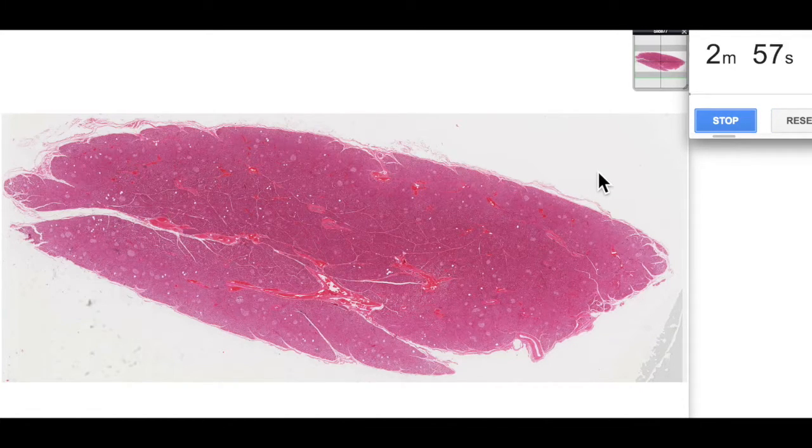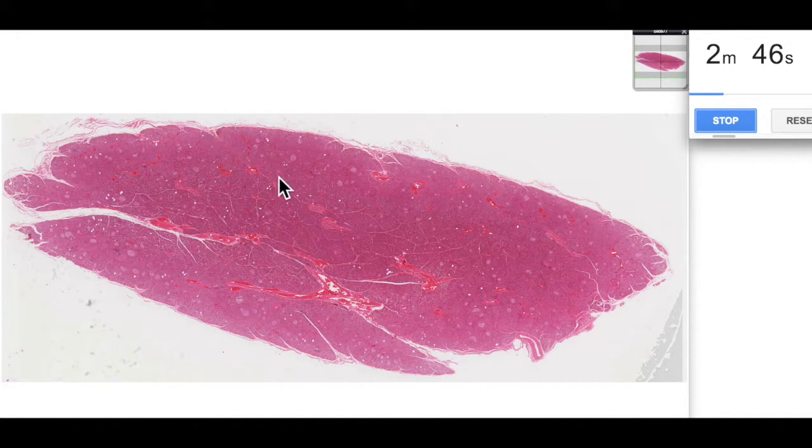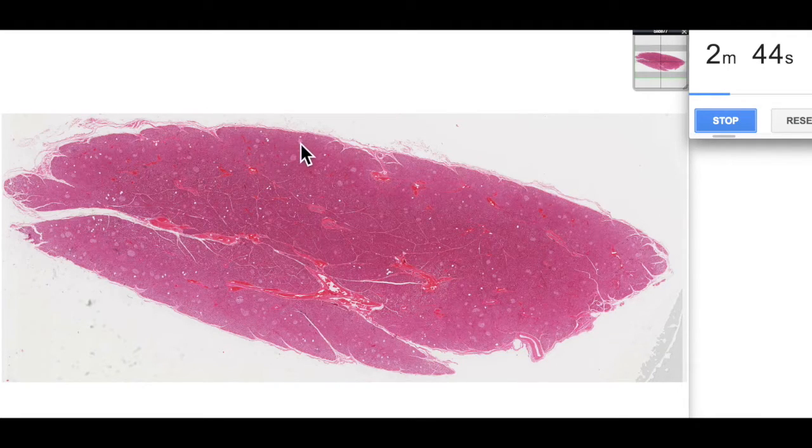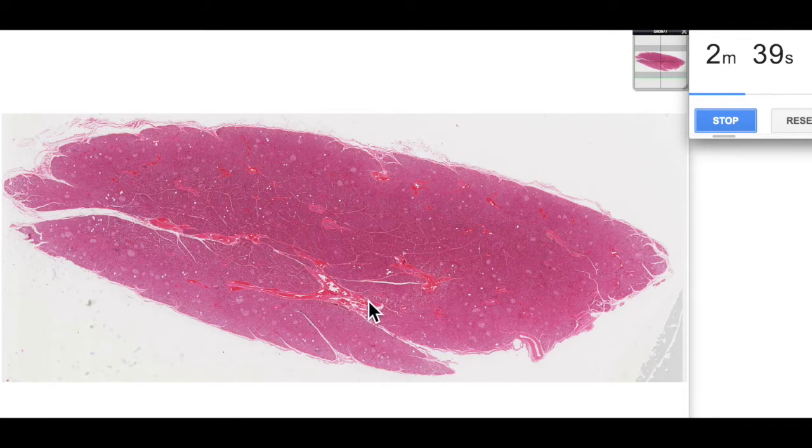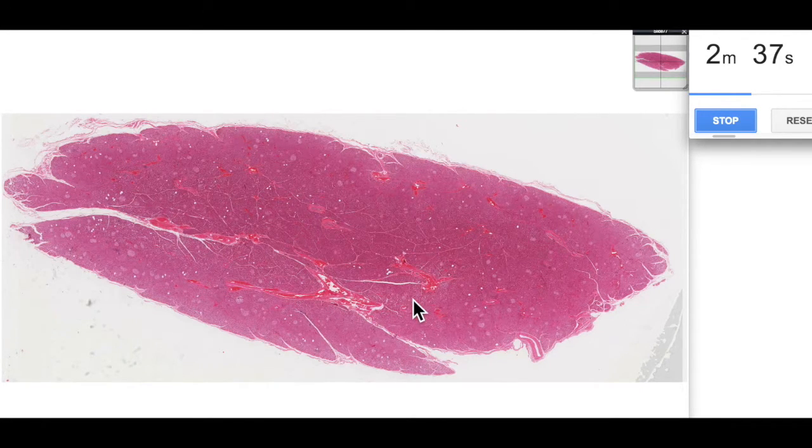If we think of this as a gland contributing to the digestive system, then much like the major salivary glands we can see similarities. We have an outer dense irregular connective tissue capsule. It sends in connective tissue septa which divides the pancreas into lobules. We can see the connective tissue here and within that connective tissue we can see some of these major blood vessels.